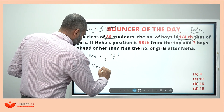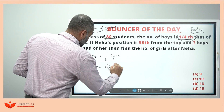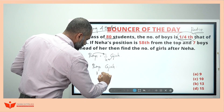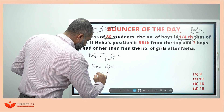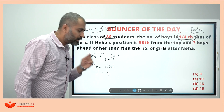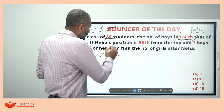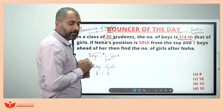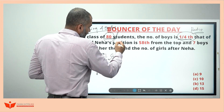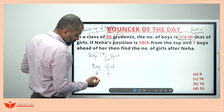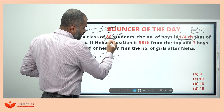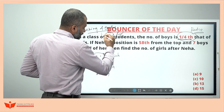Boys to girls — can I write the ratio as boys is one, girls is four? So one is to four. For every one boy, four girls are there. Eighty students are there. If you divide eighty students in the ratio one to four, that means dividing into five parts — one part's value will be equal to sixteen.